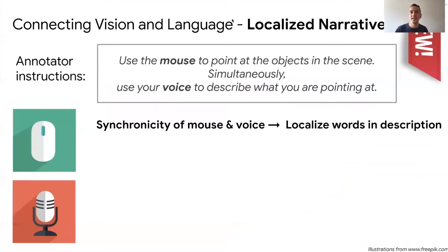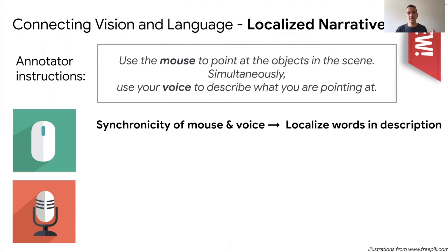In this work, we present a new protocol which we call localized narratives, which enables a much tighter coupling between vision and language. Our annotator instructions are very simple: we ask annotators to use the mouse to point at the objects they see in the scene, while at the same time using their voice to describe what they are pointing at. Speaking and pointing at the same time comes very natural to humans and they can do this in parallel effortlessly. The crucial point is that because the mouse pointer and the voice are synchronized, we can recover the location of words in the description.